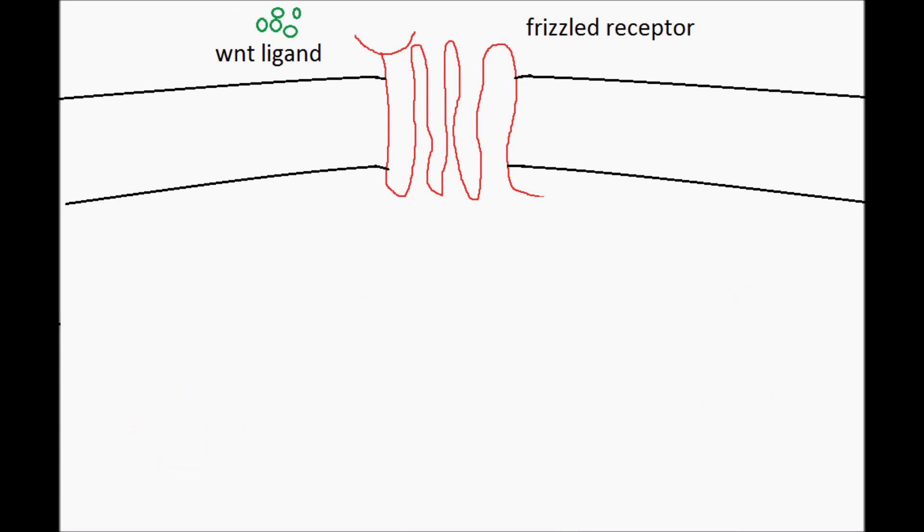When the secreted glycoprotein Wnt is present, it will bind the G-protein-coupled receptor Frizzled. This resulting signaling cascade will activate the protein called Disheveled. Disheveled represses GSK3 so that it can no longer phosphorylate beta-catenin.